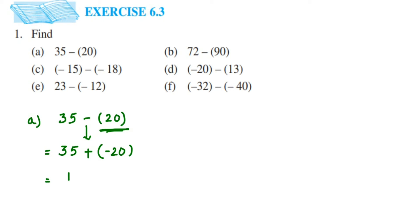So 35 minus 20 gives us 15. The sign will be that of the greater number. Compare 35 and 20 without their signs — 35 is greater, and its sign is positive, so the answer is positive 15. In summary: when subtracting integers, instead of subtracting, we add the additive inverse of the number being subtracted.